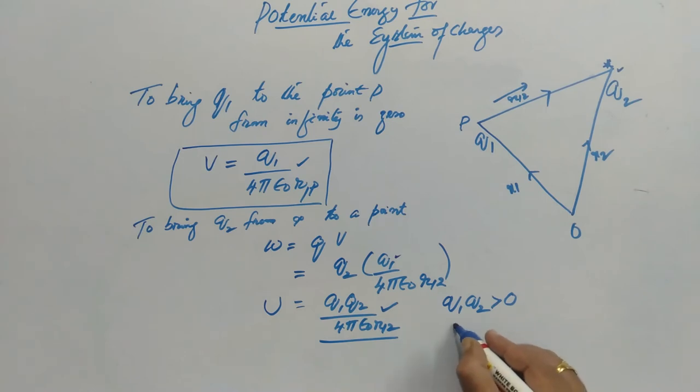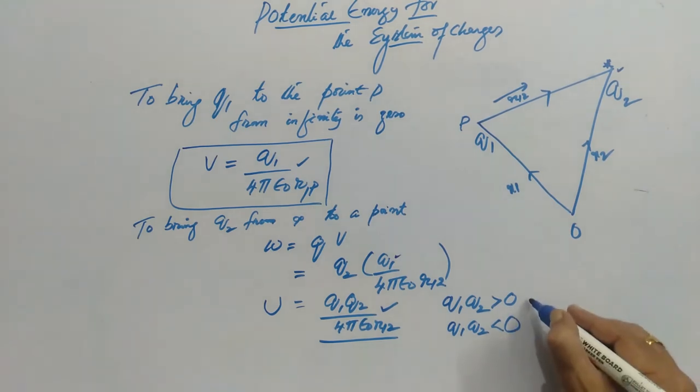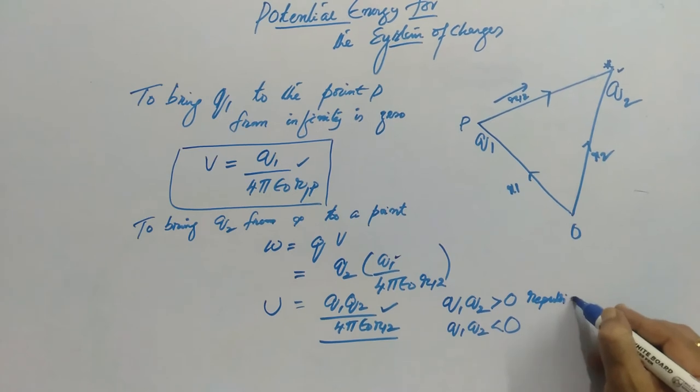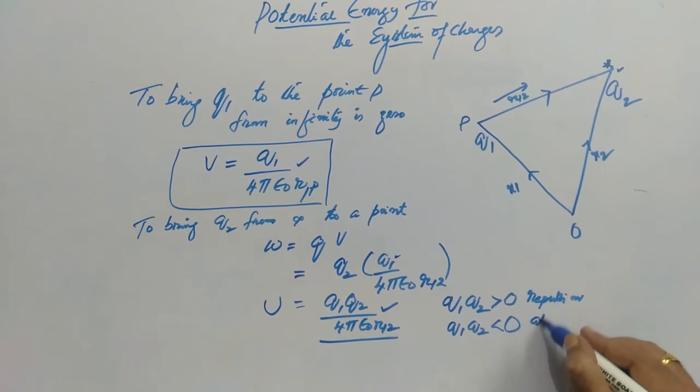If they are of opposite in nature, then Q1 Q2 will be less than zero. Then here force of repulsion and here the force of attraction. So in this case it becomes negative.